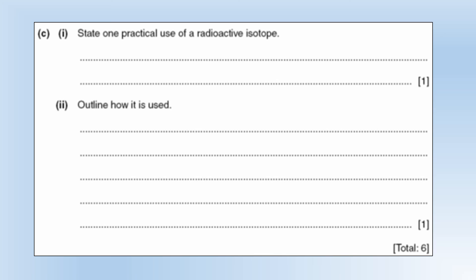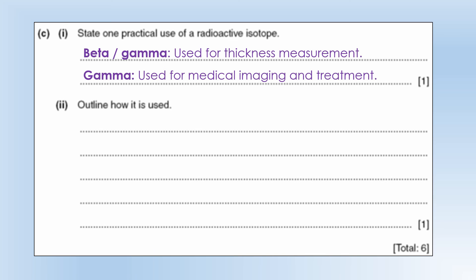State one practical use of a radioactive isotope. Well, the two that leap to mind to me, we use beta or gamma for thickness measurement in different circumstances, and we use gamma for medical imaging and treatment as well.